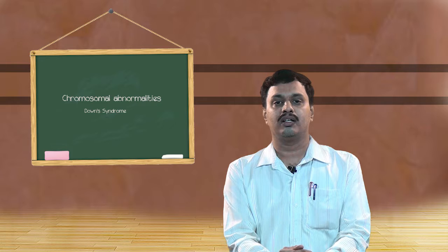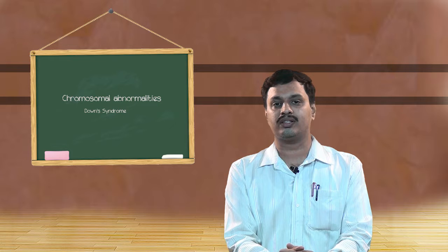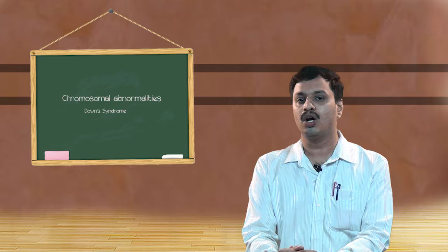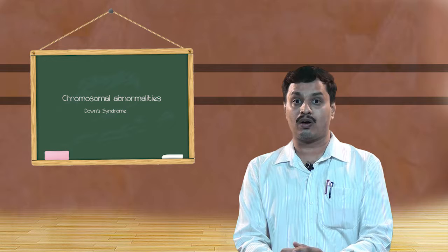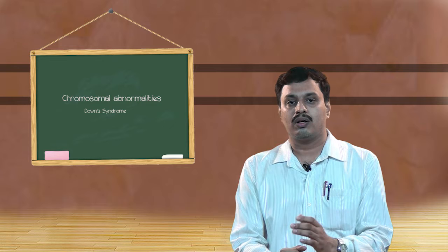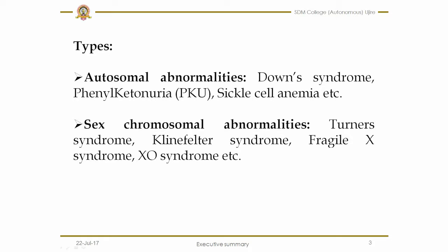Another type is sex chromosome abnormalities — abnormalities that occur in the 23rd pair of chromosomes, which is known as the sex chromosome. There may be extra additional chromosomes, addition of an X chromosome or Y chromosome, or omission of one chromosome either X or Y, or defragmentation of any one chromosome, that may result in sex chromosomal abnormalities. Examples include Klinefelter syndrome, Turner syndrome, XO syndrome, and Fragile X syndrome.